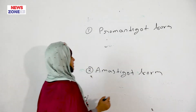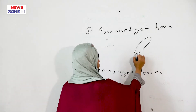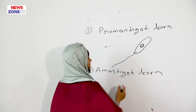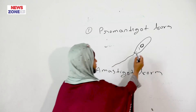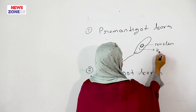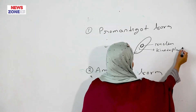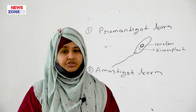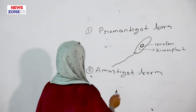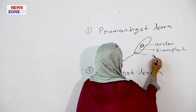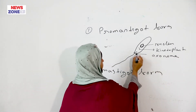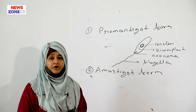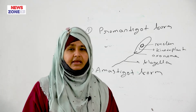The promastigote form has an elongated body with a flagella, a nucleus, and a kinetoplast. The kinetoplast is obliquely present and comprises a DNA-containing body and a mitochondrial structure. The root of the flagella is called the axoneme. The promastigote form remains in the vector, which is the sand fly, and in culture media.